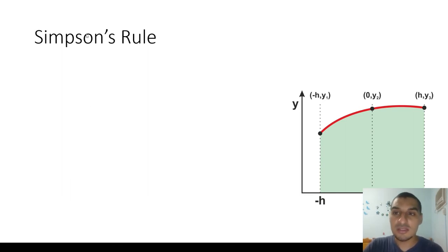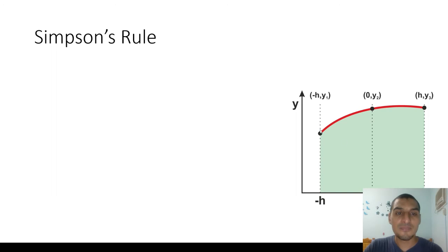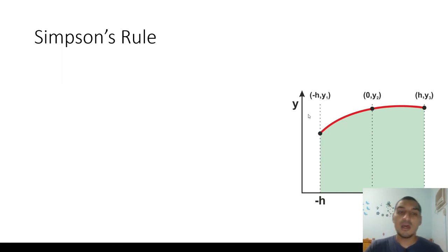This method is Simpson's Rule. Simpson's Rule assumes that the spacing between the points is equidistant. For example, with three points, the distance between the first and the second equals the distance between the second and the third, which is h. We assume this corresponds to y1, this x corresponds to y2, and this x corresponds to y3.